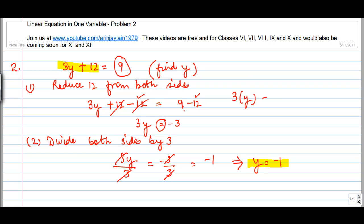We have 3y plus 12, the left hand side, or 3 into minus 1 plus 12, or minus 3 plus 12 is equal to 9. Now, what I note here is that the value of 9 which is coming here is equal to the right hand side.